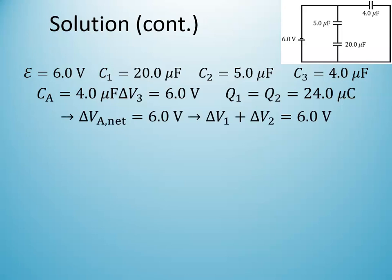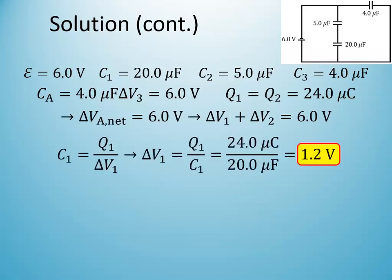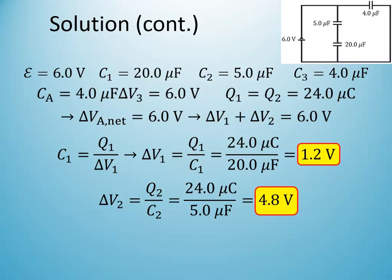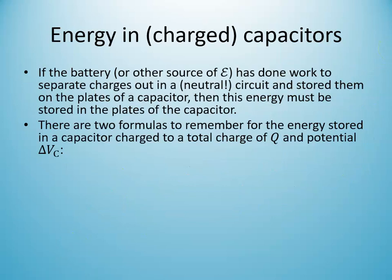The voltage across capacitor 1 (20 μF) is V₁ = Q/C₁ = 24/20 = 1.2 V, and the remaining voltage across capacitor 2 (5 μF) is 4.8 V. That's how you find both the equivalent capacitance of hybrid circuits and the individual charge and potential difference on each capacitor.